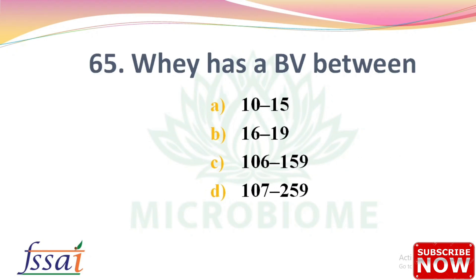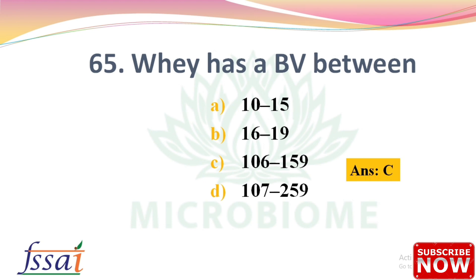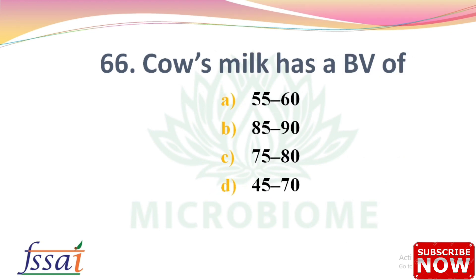Next: Wheat has a biological value between — options: 10–15, 16–19, 106–159, 107–259. The right answer is option C, 106 to 159. Next: Cow's milk has a biological value of — options: 55–60, 85–90, 75–80, 45–70. The right answer is option B, 85 to 90.